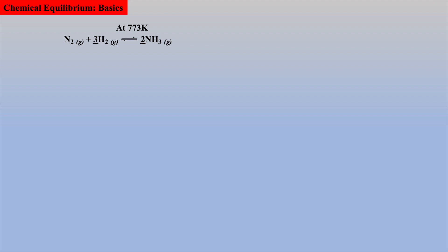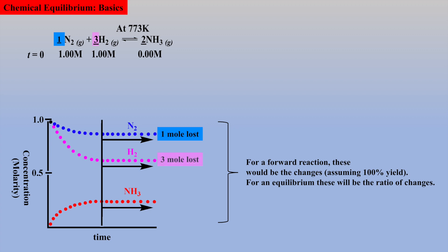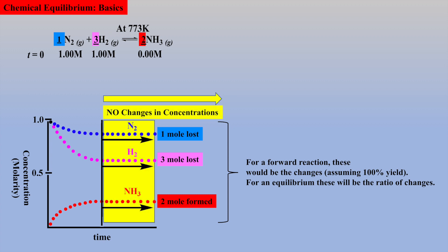Let's look at an example reaction — the synthesis of ammonia from hydrogen and nitrogen, called the Haber reaction. Equal amounts of nitrogen and hydrogen were mixed, a concentration of one molar for each, at 773 Kelvin. As we plot the concentrations versus time, we see that for every one mole of nitrogen lost, three moles of hydrogen are lost, and two moles of ammonia are formed, due to stoichiometry, until the concentrations do not change after some time T. At this point, the system has reached equilibrium.